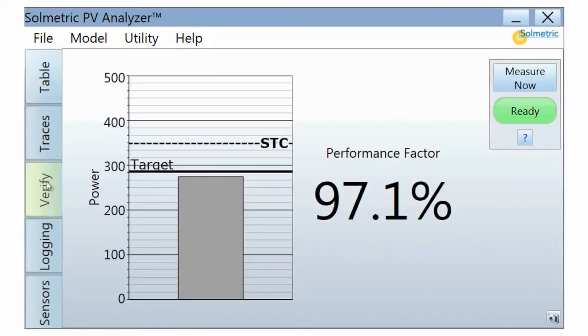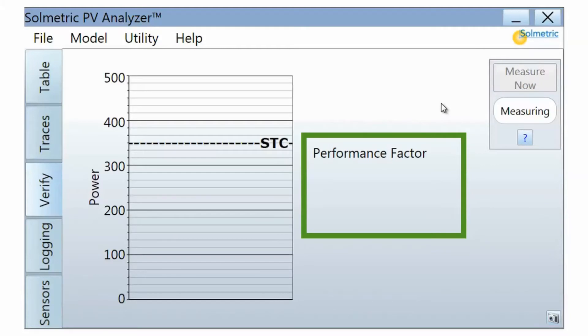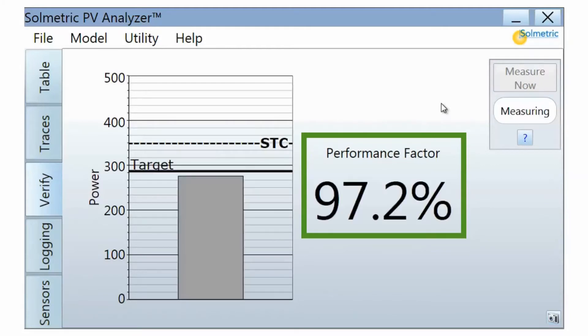The Verify tab shows a simple percentage value that represents the measured power output as a percentage of the power predicted by the performance model. This percentage is called the performance factor, and it provides a quick and simple method of performance verification.